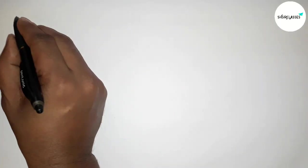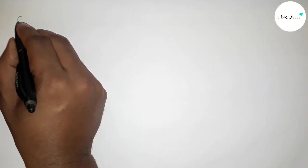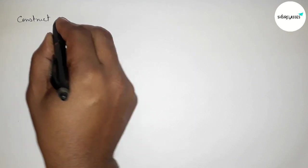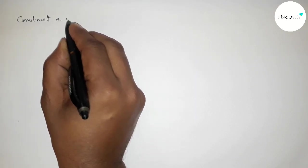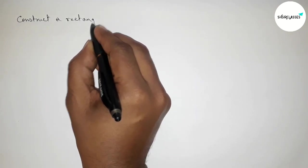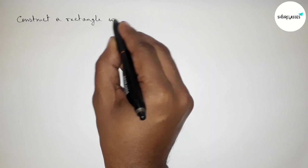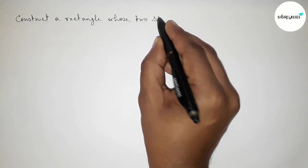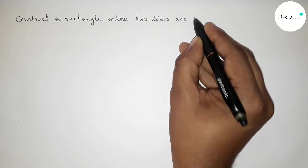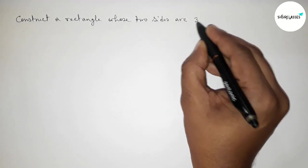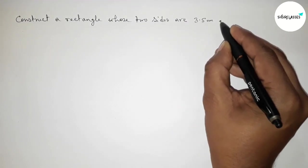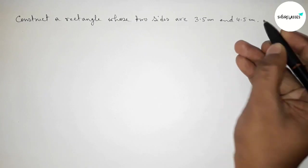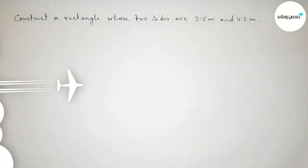Hi everyone, welcome to a size share class. Today in this video we have to construct a rectangle whose two sides are 3.5 centimeters and 4.5 centimeters. Please watch the video till the end. Let's start.